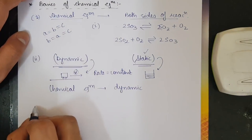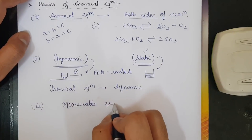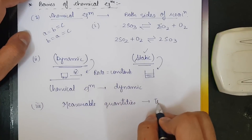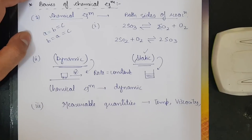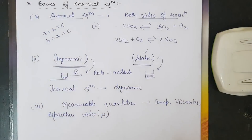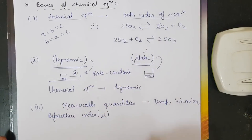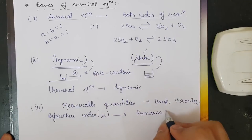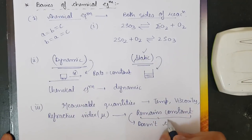The third point is about measurable quantities — quantities you can measure with a particular unit, such as temperature, viscosity, refractive index, or concentration. Whenever we have a chemical equilibrium, all measurable quantities like temperature, viscosity, refractive index, and concentration remain constant and do not change with time.